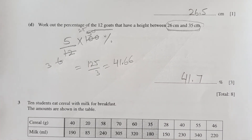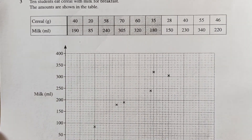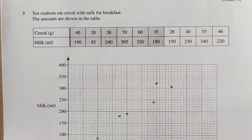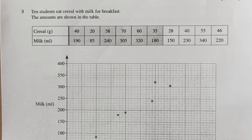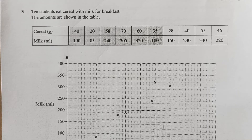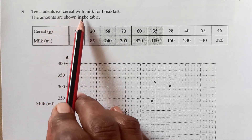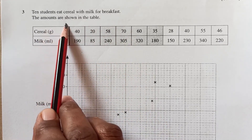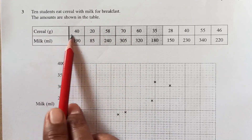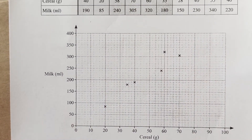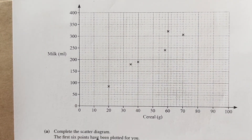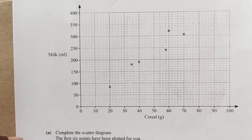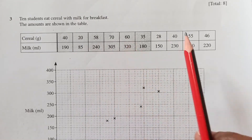Before we start the next question, please subscribe to my channel, share it with your friends, and leave your comments and feedback. Question 3: ten students eat cereals with milk for breakfast; the amounts are shown in a table. Milk is on one axis, cereal on the other. The first six points have already been plotted; we need to plot the remaining ones.